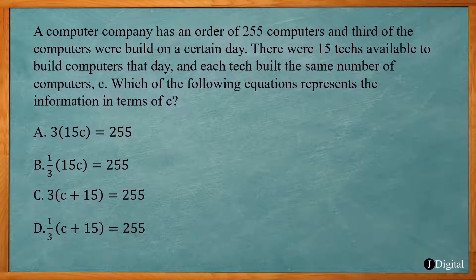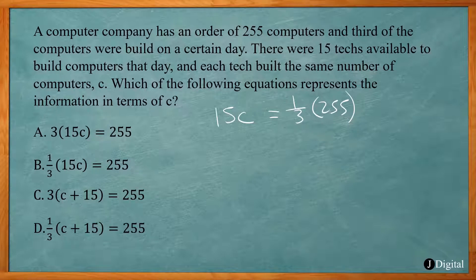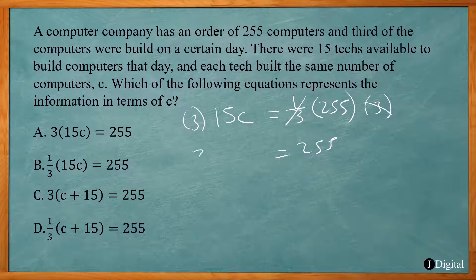This problem says a computer company has an order of 255 computers, and a third of the computers were built on a certain day. There were 15 techs available, and each tech built the same number of computers, c. Each tech built c computers, so 15c equals one-third of 255. Rearranging by multiplying both sides by 3, we get 3 times 15c equals 255. So that is answer A.